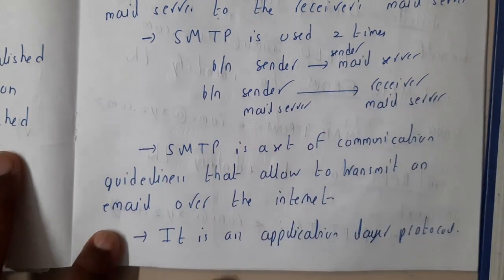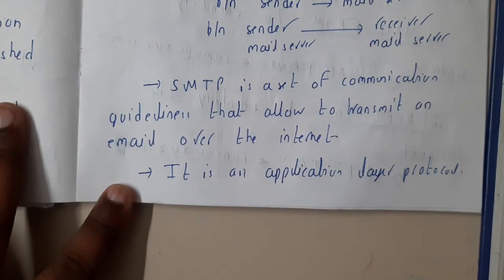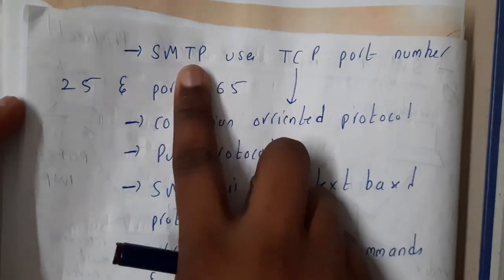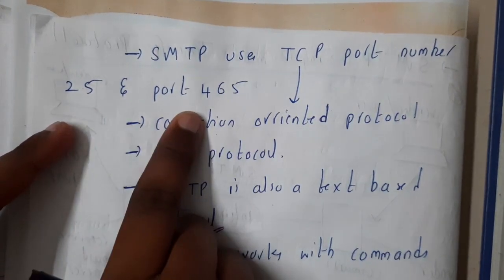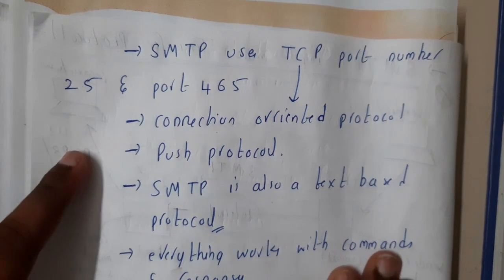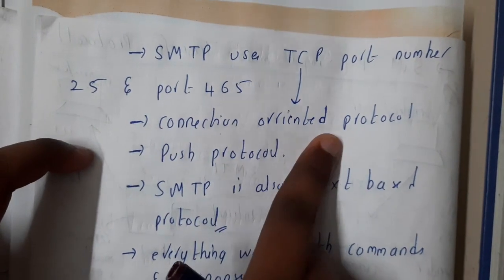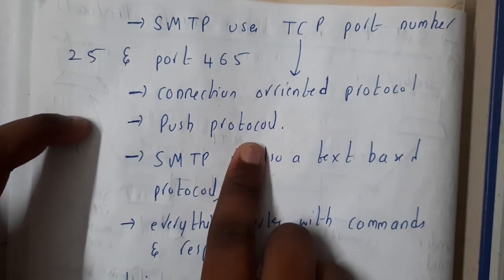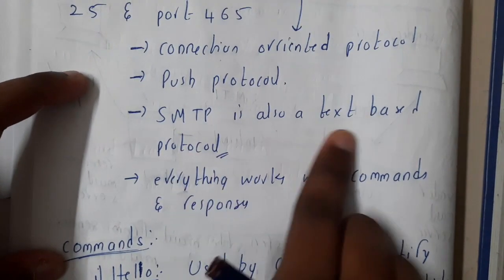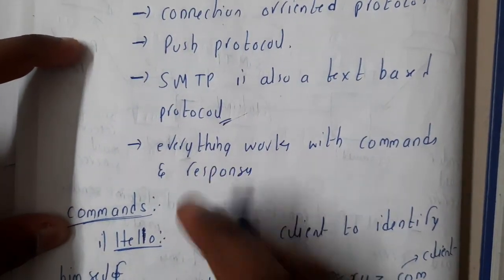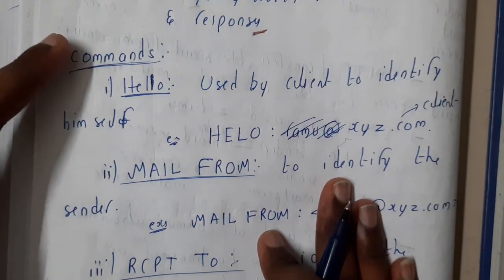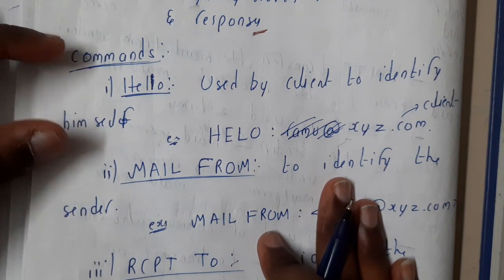SMTP is a set of communication guidelines that allow transmitting email over the internet. It is an application layer protocol. SMTP uses TCP port number 25 and port 465. TCP is connection-oriented, and SMTP is also called a push protocol. It is a text-based protocol that works with commands and responses.